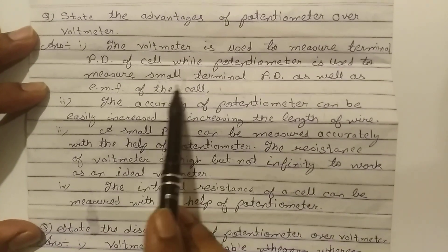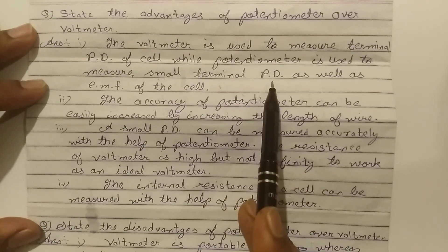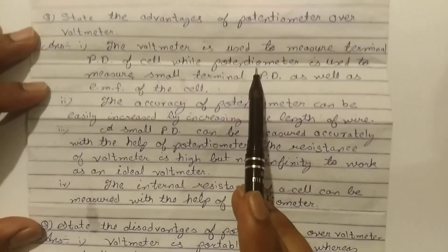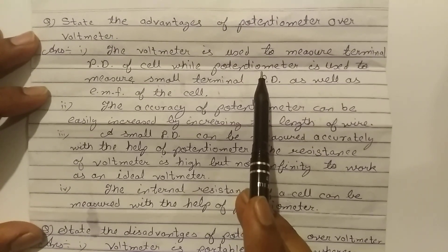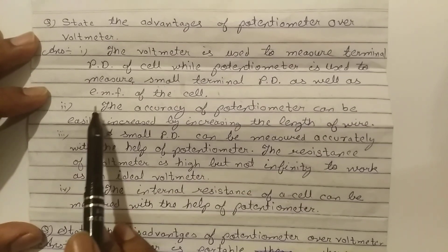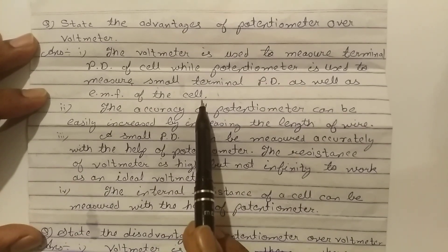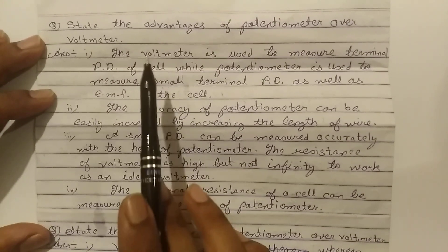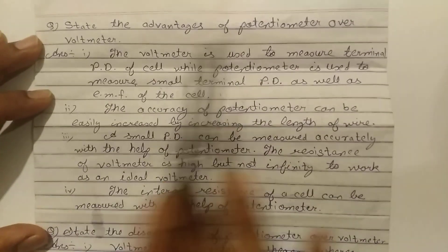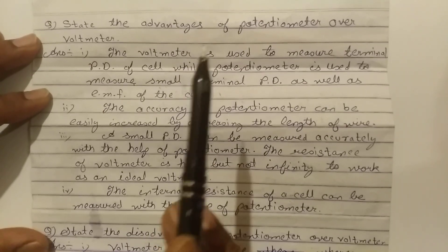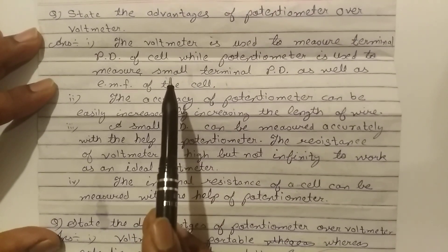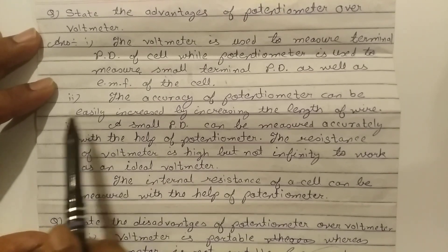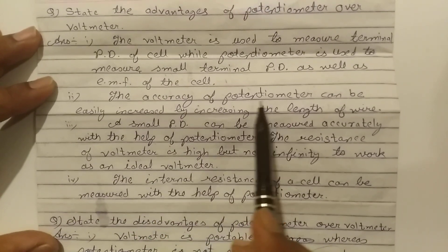The potentiometer is used to measure very small terminal potential difference. If the value is very small, using a potentiometer we can measure it easily. At the same time, we can measure the EMF of a cell — the voltage of a battery — which a voltmeter is not able to measure. That is the first advantage of potentiometer over voltmeter.